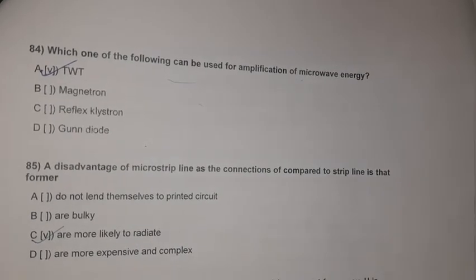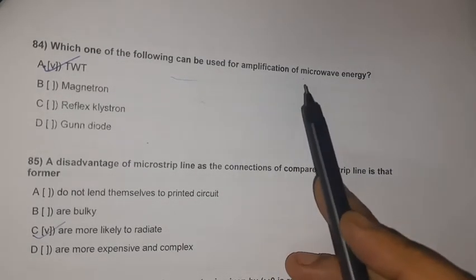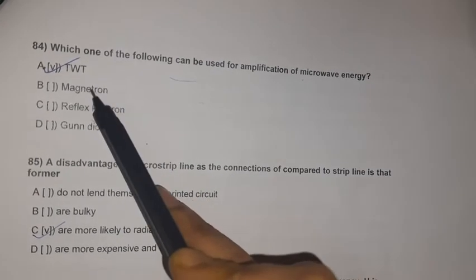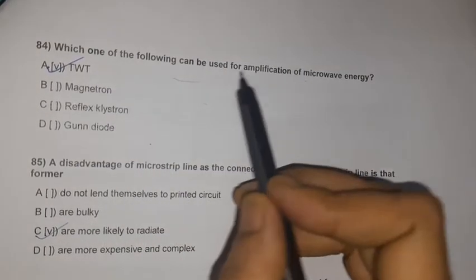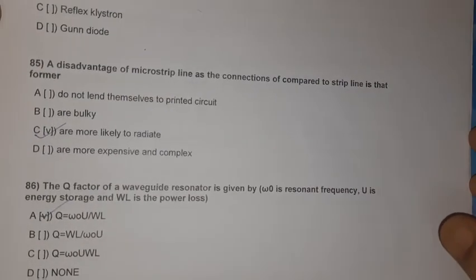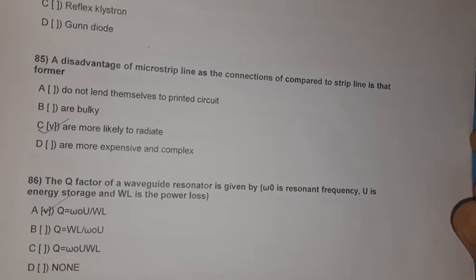Question 82: Which device can be used for amplification of microwave energy? The Traveling Wave Tube (TWT). The remaining options — magnetron, reflex klystron, and Gunn diode — are oscillators, not amplifiers.